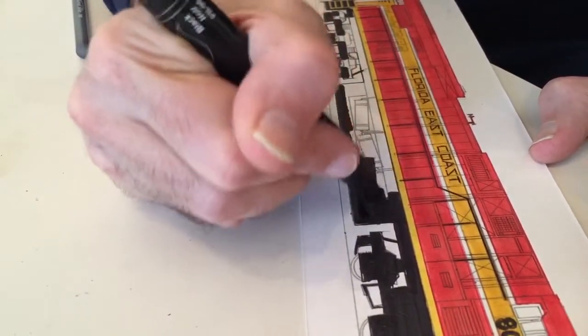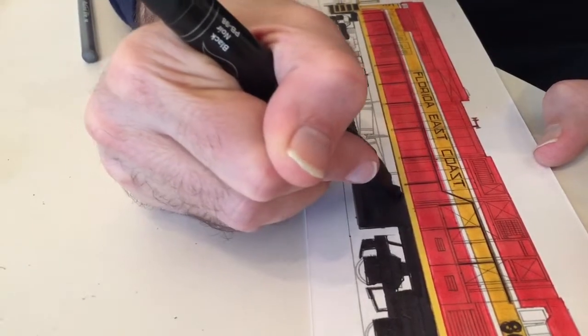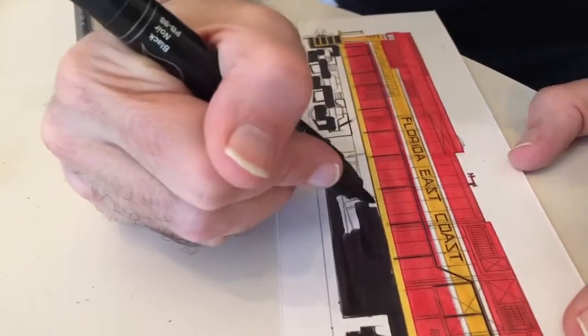And then the tank is kind of the easiest part of the underframe, but you still have to stay straight along.